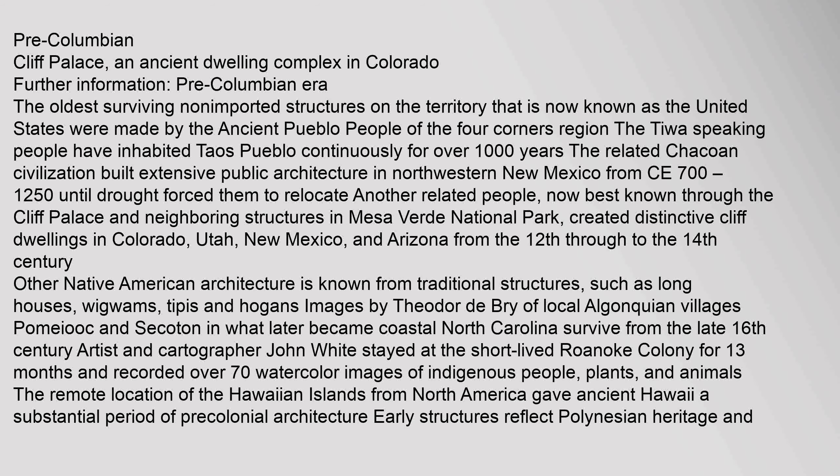The oldest surviving non-imported structures on the territory now known as the United States were made by the ancient Pueblo people of the Four Corners region. The Tewa-speaking people have inhabited Taos Pueblo continuously for over 1,000 years. The related Chacoan civilization built extensive public architecture in northwestern New Mexico from CE 700–1250 until drought forced them to relocate. Another related people, now best known through the Cliff Palace and neighboring structures in Mesa Verde National Park, created distinctive cliff dwellings in Colorado, Utah, New Mexico, and Arizona from the 12th through to the 14th century.